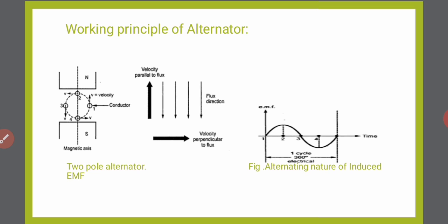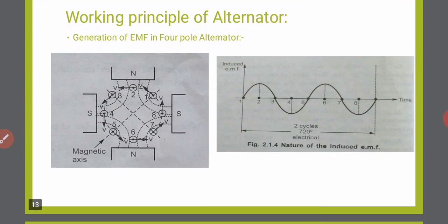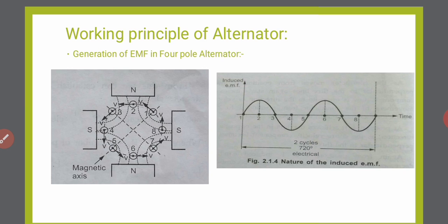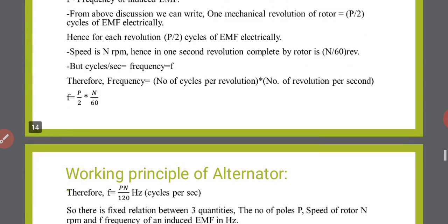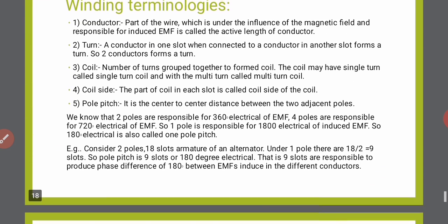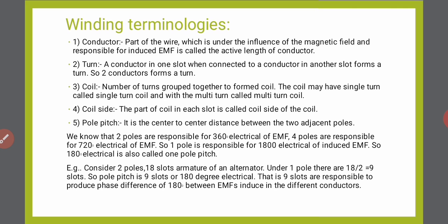For a two-pole alternator, the center-to-center distance is 180 degrees mechanical and 180 degrees electrical. For a four-pole machine, the center-to-center distance from N pole to S pole is 90 degrees mechanical, but checking the waveform from position 2 to 3 to 4 it remains 180 degrees electrical. For an eight-pole machine, the mechanical distance reduces further, but the center-to-center distance always remains 180 degrees electrical. Therefore, one pole pitch equals 180 degrees electrical.